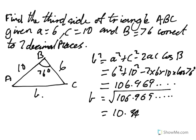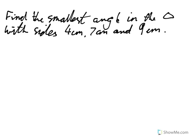Let's look at another example. Find the smallest angle in the triangle with sides 4 centimeters, 7 centimeters, and 9 centimeters. So here is our triangle A, B, and C. We haven't been told here in the question which is A, B, and C, so we just go in order: A is 4, B is 7, and C is 9. The question is which is the smallest angle?